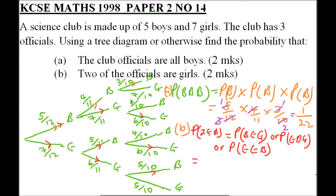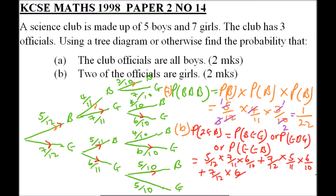We calculate: 5/12 × 7/11 × 6/10, plus 7/12 × 5/11 × 6/10, plus 7/12 × 6/11 × 5/10. When you simplify and add these three terms together, you should get 21 over 44. That is the probability that exactly two of the three officials are girls.